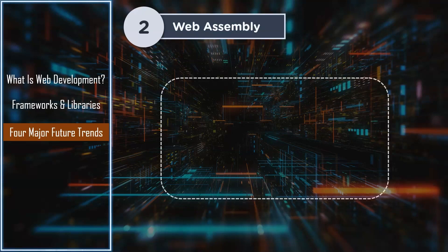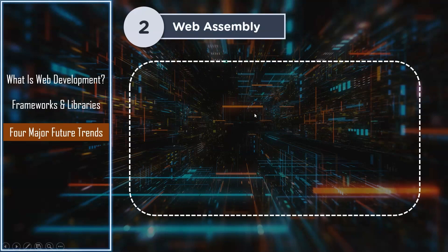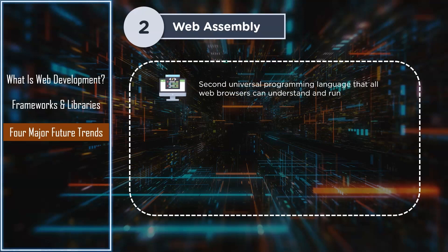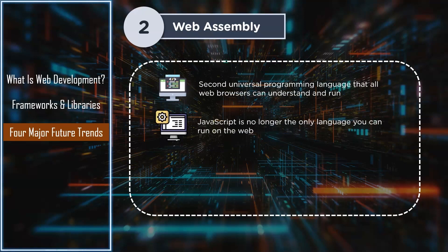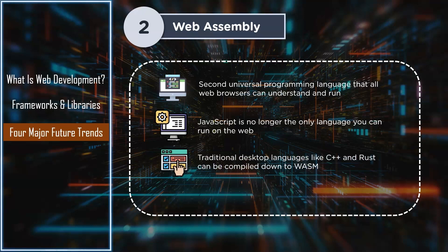Next up is Web Assembly. Web Assembly is a new way to run code on the web. Web Assembly, or WASM, is the second universal programming language that all web browsers can understand and run. You're not going to be writing scripts in Web Assembly yourself — it's a low-level assembly language designed to be very close to compiled machine code and native performance. This means JavaScript is no longer the only language you can run on the web; web browsers can now run any language.